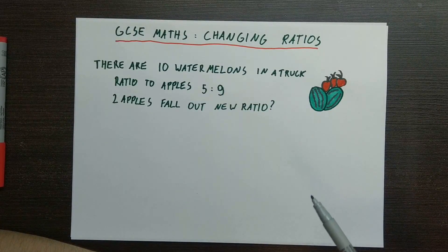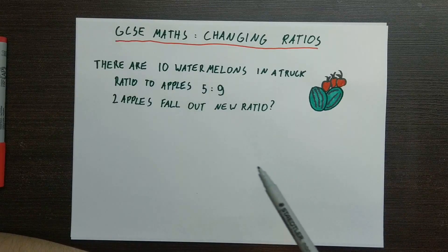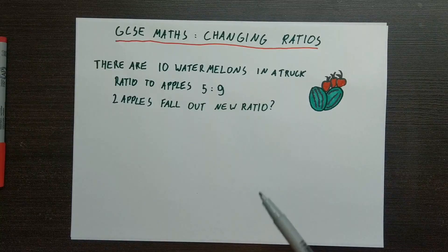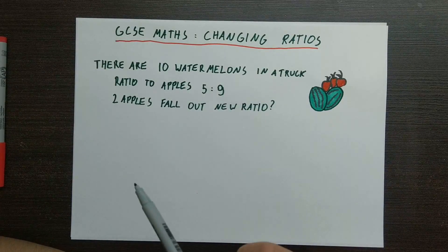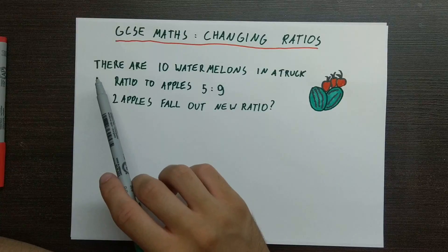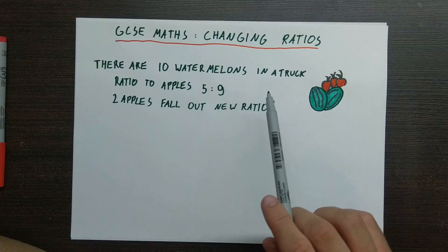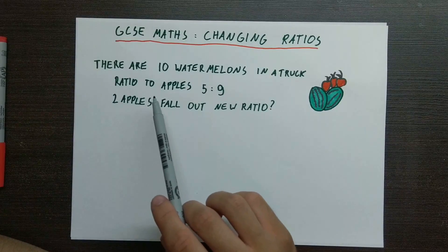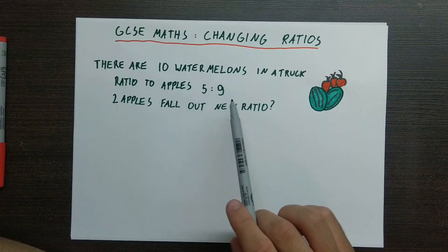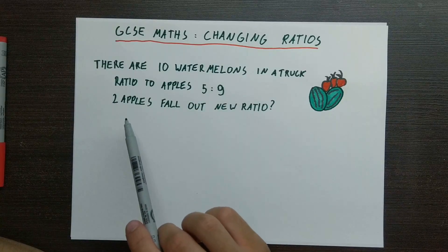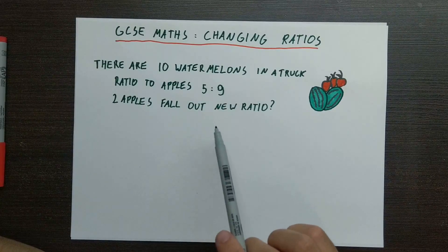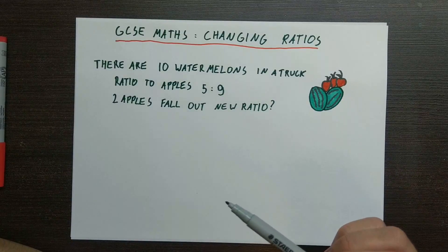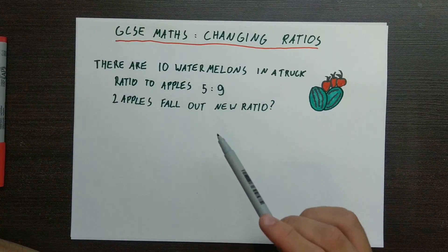The first thing we need to learn is how to find new ratios based on old ratios and some additional information. Here is a question: there are 10 watermelons in a truck, and there are apples as well, and the ratio of watermelons to apples is 5 to 9. Now two apples fall out. What is the new ratio? First of all, we need to find the original number of apples.